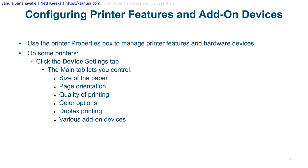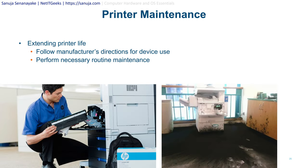You can use the printer properties box to manage printer features and hardware devices. Click the Device Settings tab, then the Main tab to control paper size, page orientation, print quality, color options, duplex printing, and various add-on devices. These settings are unique to each printer model and manufacturer, so refer to the manufacturer's information for specifics.